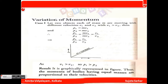Next, variation of momentum — there are three cases. Case 1: let two objects each of mass m be moving with different velocities v1 and v2, where v1 is much greater than v2. So p1 equals mv1 and p2 equals mv2, giving p1 by p2 equals v1 by v2. The p versus v graph is always a straight line passing through the origin. Momenta of bodies having equal masses are proportional to their velocities.